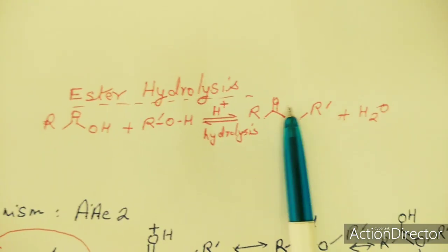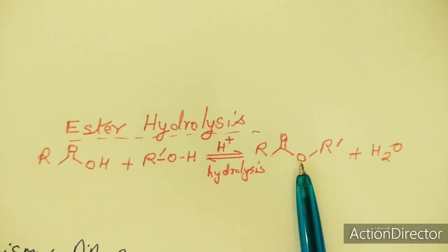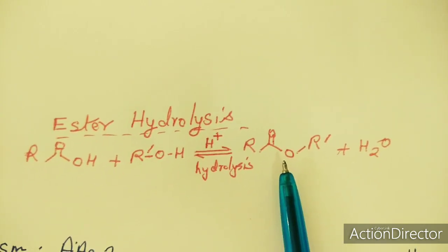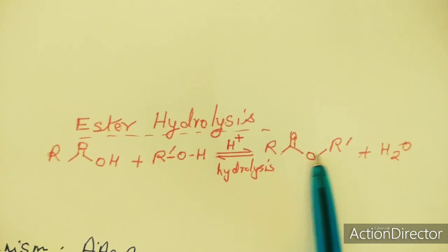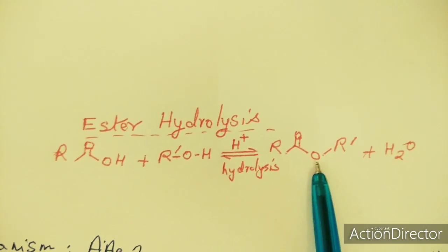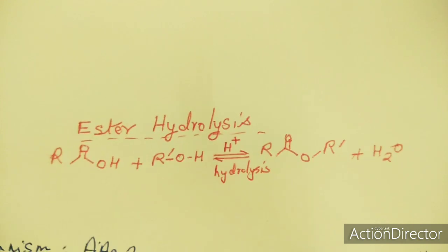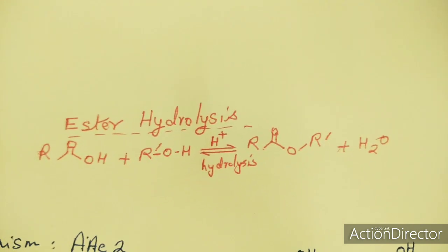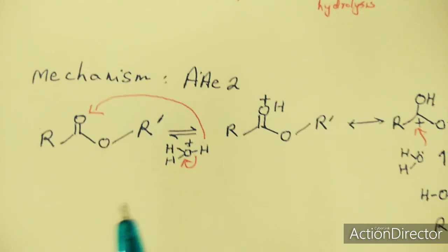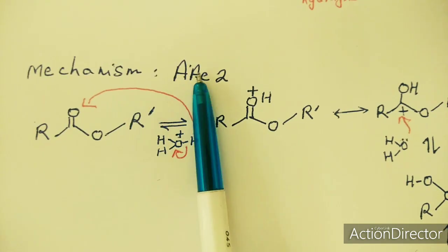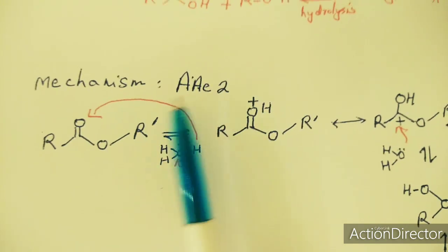This reaction can take place in a number of ways — we will be dealing with the mechanism now. It can be acid catalyzed or base catalyzed. At the same time, it can involve breaking of the acyl oxygen bond or the alkyl oxygen bond; it can be SN1 or SN2. The important one we will start with today is the AAC2 mechanism — acid catalyzed, acyl oxygen fission, molecularity 2.